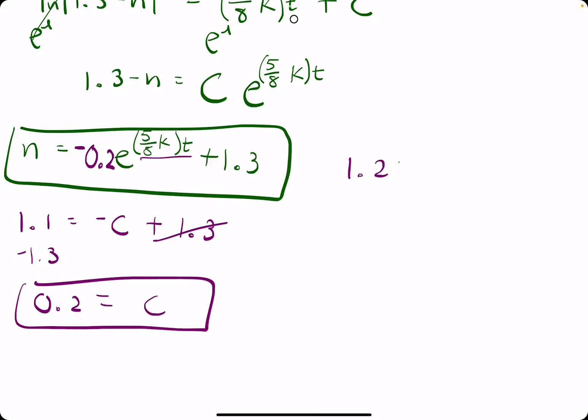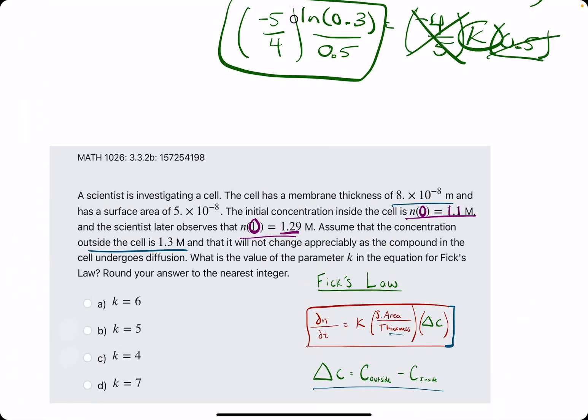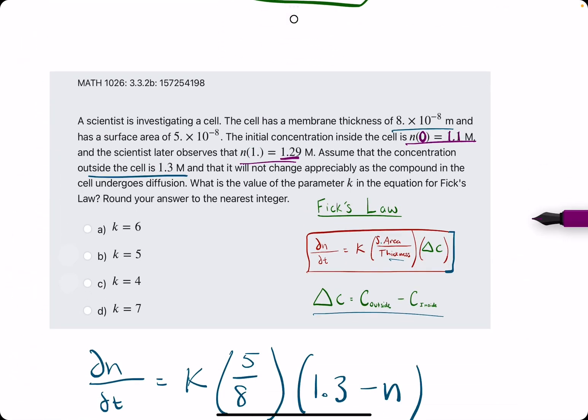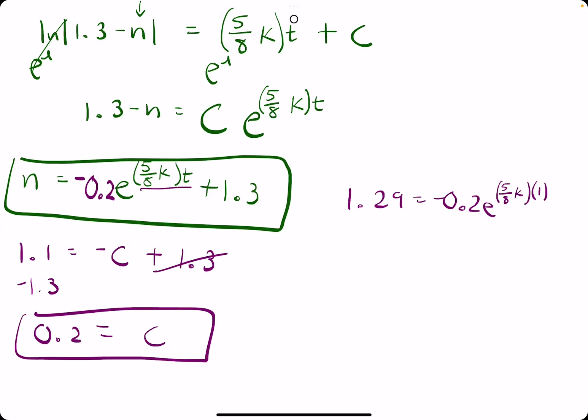So, n equals 1.29, negative 0.2e to the 5 eighths k, times t, which is the 1. And then plus 1.3.